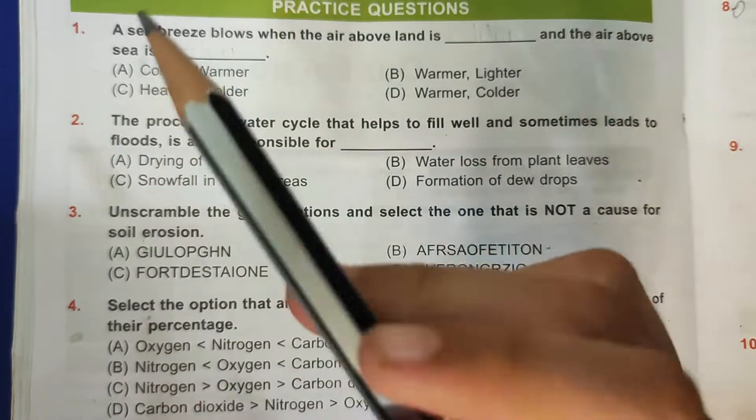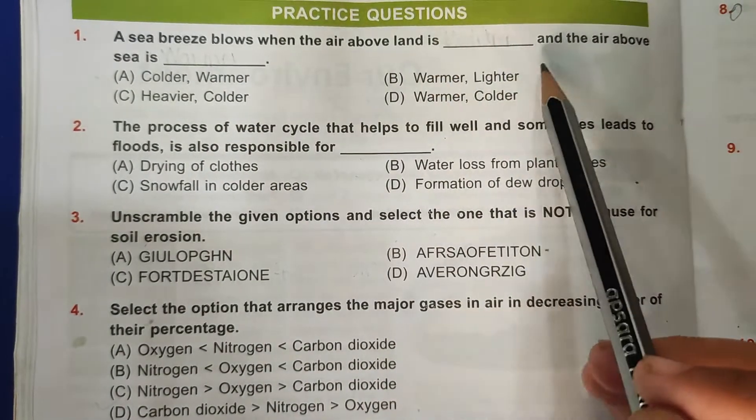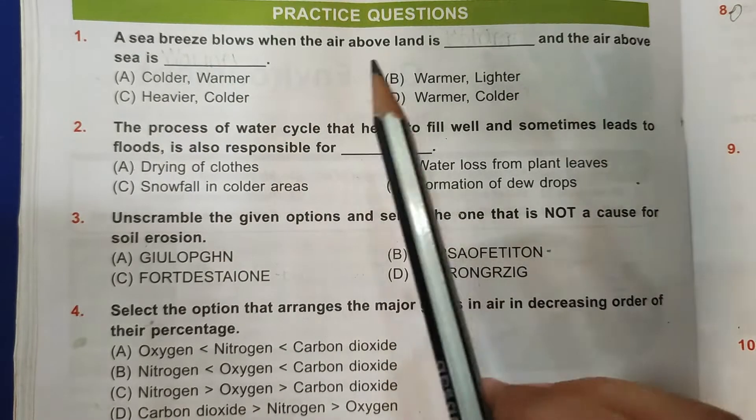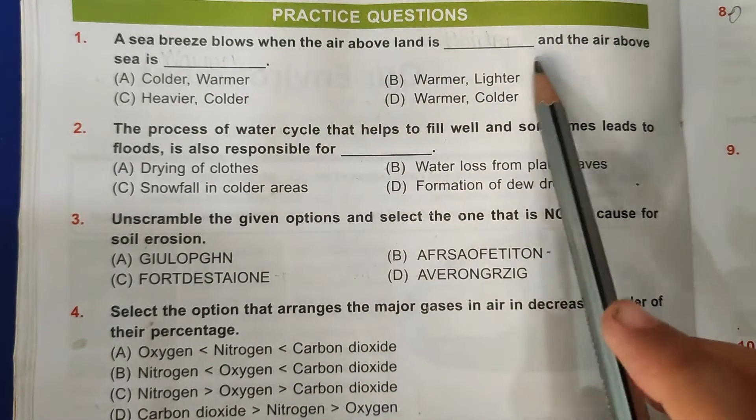Hello friends, my name is Tejas and welcome to my channel. Today we are going to learn NSO Chapter 7, Our Environment. So let's start. First question: A sea breeze blows when the air above land is blank and the air above sea is blank.